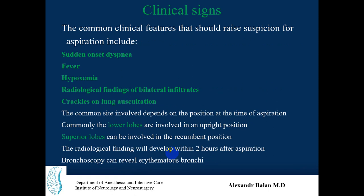Clinical signs: the most common clinical features that should raise suspicion for aspiration pneumonia are sudden onset of dyspnea, fever, hypoxemia, radiological findings of bilateral infiltrates, and crackles on lung auscultation. Position is very important — the most common side involved depends on the position at time of aspiration. Commonly lower lobes are involved in an upright position, while superior lobes can be involved in the recumbent position.